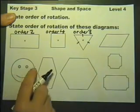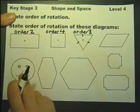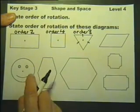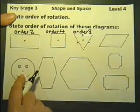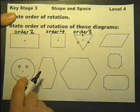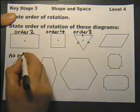Now something like this. The only way you can make that fit in its own space if you rotate about the centre is to turn it all the way round. And if the only way you can do it is to turn it all the way round, we say it's got no rotational symmetry.